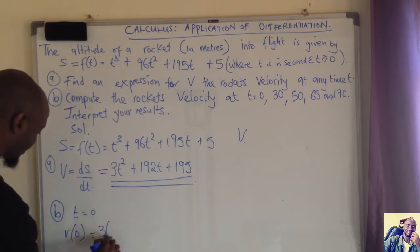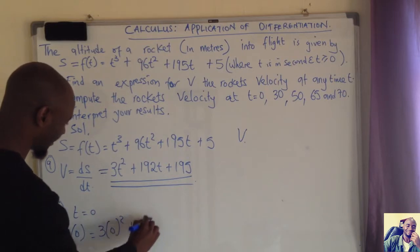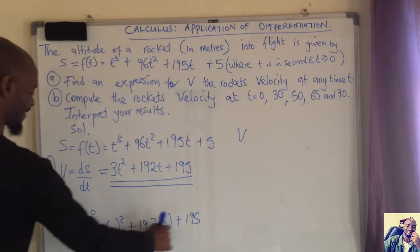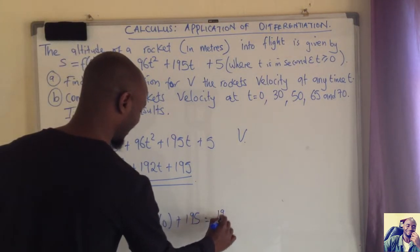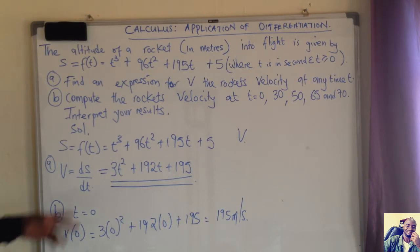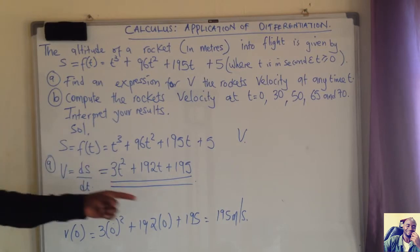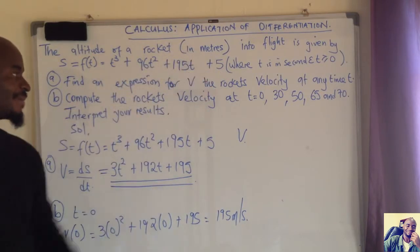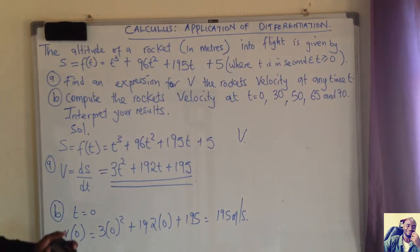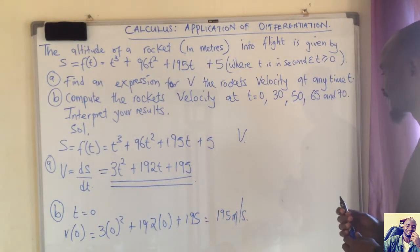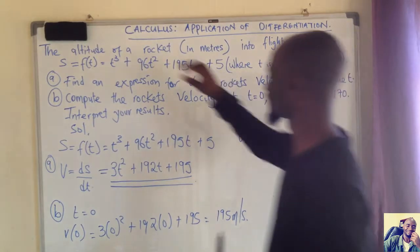To find v at t = 0, wherever there is t in the expression for v, we put zero. So this becomes 3 multiplied by 0 squared plus 192 times 0 plus 195, which gives us 195 meters per second. So at t equal to zero, the velocity of the rocket equals 195 meters per second. Don't forget the units — meters per second.